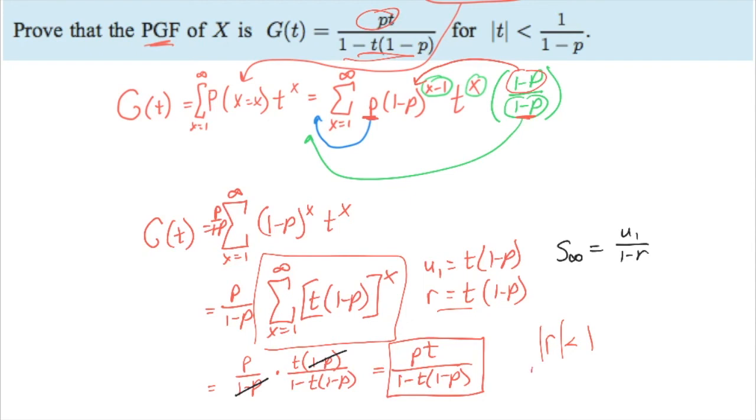So that means that the absolute value of t times 1 minus p has to be less than 1. Now of course 1 minus p we know is positive so I can divide both sides by that and then what I'm left with is the absolute value of t needs to be less than 1 over 1 minus p. Now, therefore this, when we did that summation to infinity, that only works when the r is less than 1 or in other words, when t is less than 1 over 1 minus p. And so therefore, this is a correct PGF as long as the modulus of t is less than 1 over 1 minus p. Alright, so that's that one. Thank you.